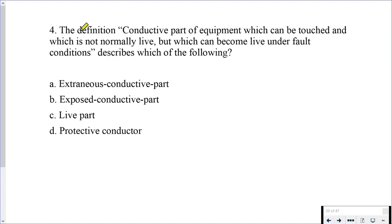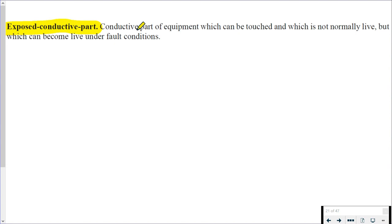Question 4: the definition 'conductive part of equipment which can be touched and which is not normally live, but which can become live under fault conditions' describes which of the following? We've got these four definitions that we need to go and find. My answer route for this is going to be alphabetical order: exposed, extraneous, live, protective conductor. I'm just alphabetizing it, trying to save myself time rather than bouncing through the book. Now, just by chance, exposed conductive part happens to be the one that we're looking for. But if this was the second, third, or fourth one, you would just bounce through the rest of your definitions looking for it unless you knew it.